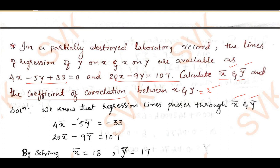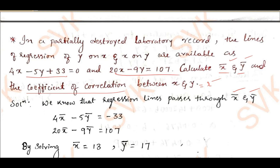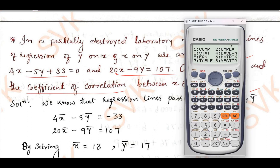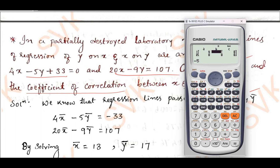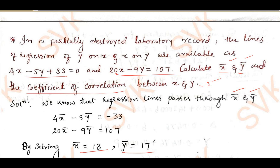Rewriting the given equations: 4x̄ − 5ȳ = −33 and 26x̄ − 9ȳ = 107. Solving this system on the calculator — press Mode, then Equation (5), select equation type 1, and enter the coefficients: 4, −5, −33 for the first equation and 26, −9, 107 for the second. Pressing equals gives x̄ = 13 and ȳ = 17.